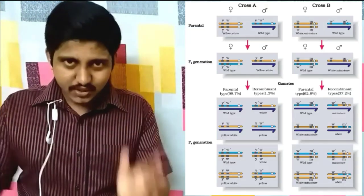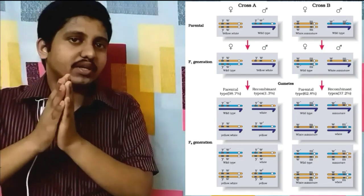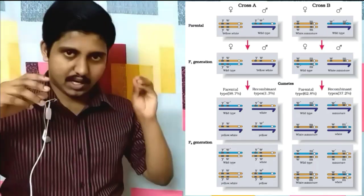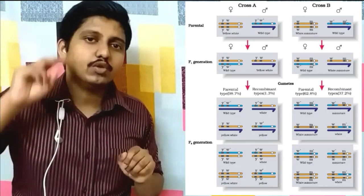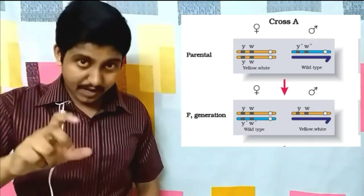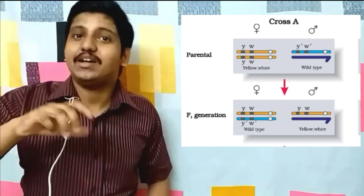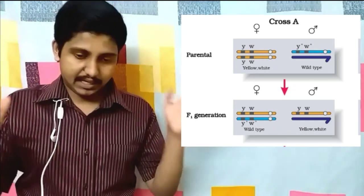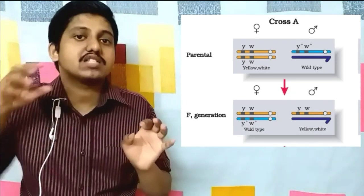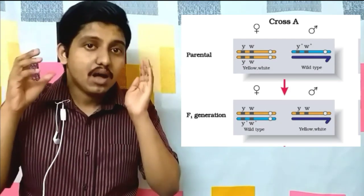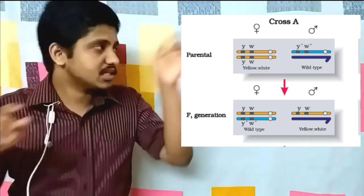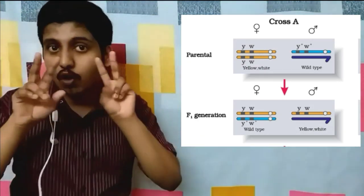In the first experiment, Morgan and his students considered two major characteristics: yellow-bodied white-eyed females crossed with brown-bodied red-eyed males. Brown body color and red eye color are the dominant characteristics, which is why they are called wild type. He used two homozygous genotypes in this cross.